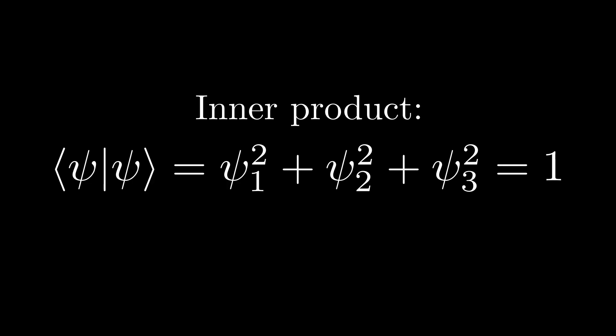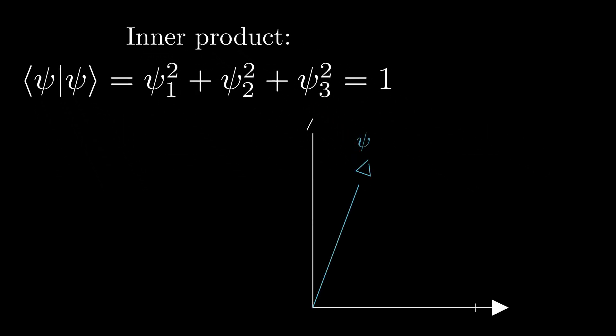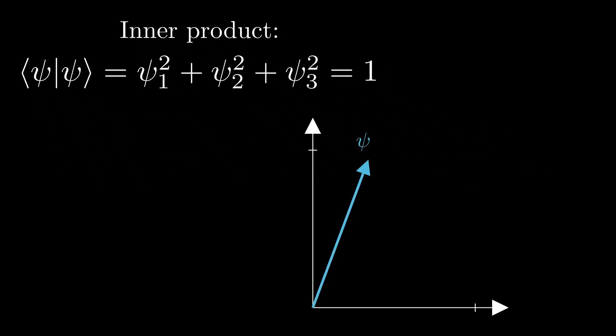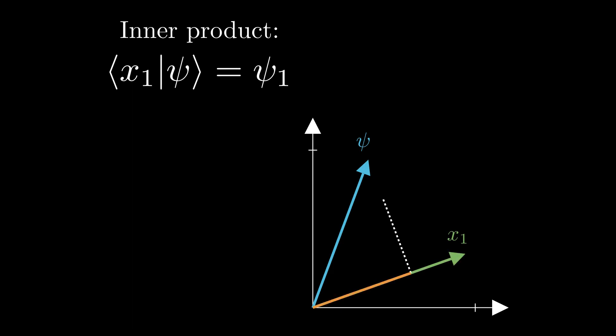The use of dot products becomes even more apparent when working in a specific basis. In our case the three spatial coordinate basis. Say we want to know how much our wave function is pointed along the x1 direction, we simply take the bra-ket combination of the wave function and the x1 basis vector. This inner product can be seen as the length of the component of psi along the direction of the x1 vector.